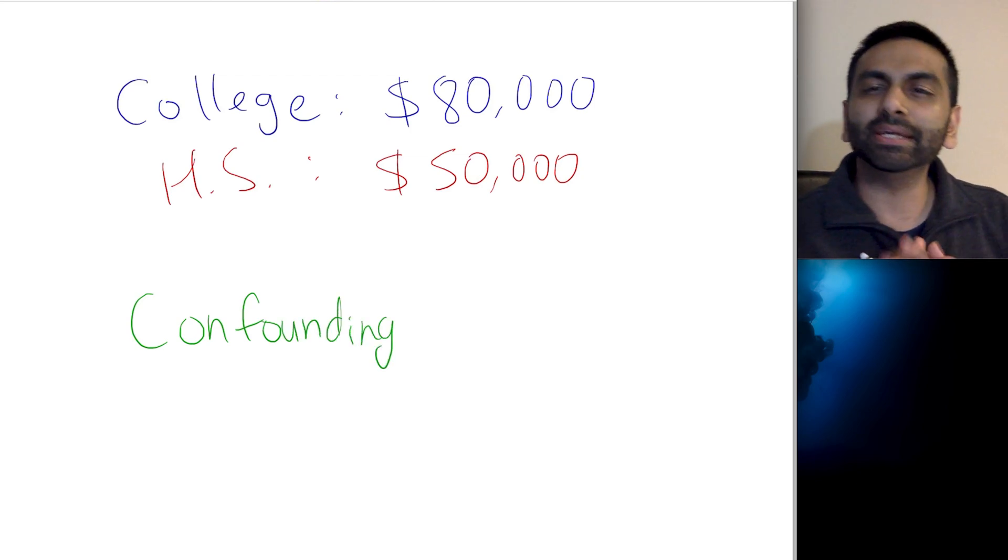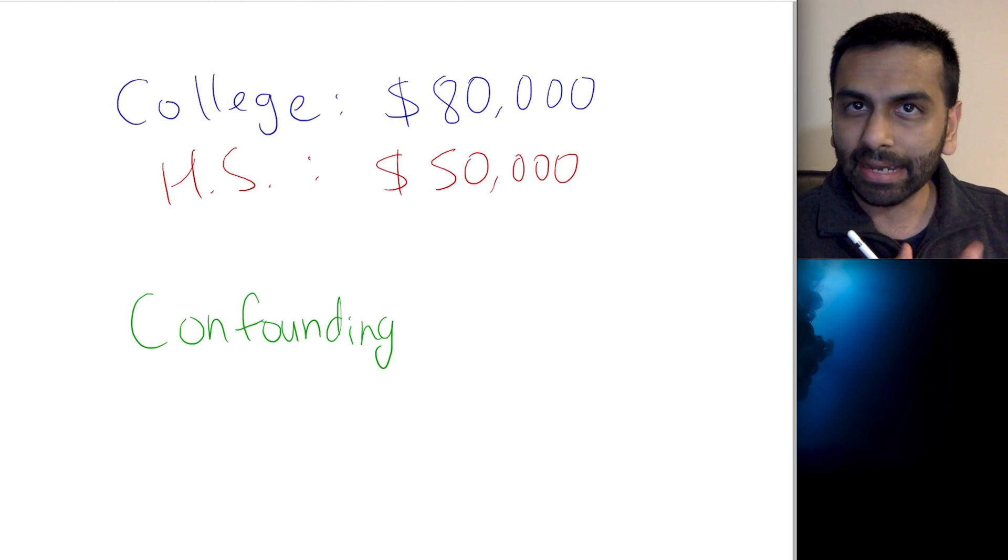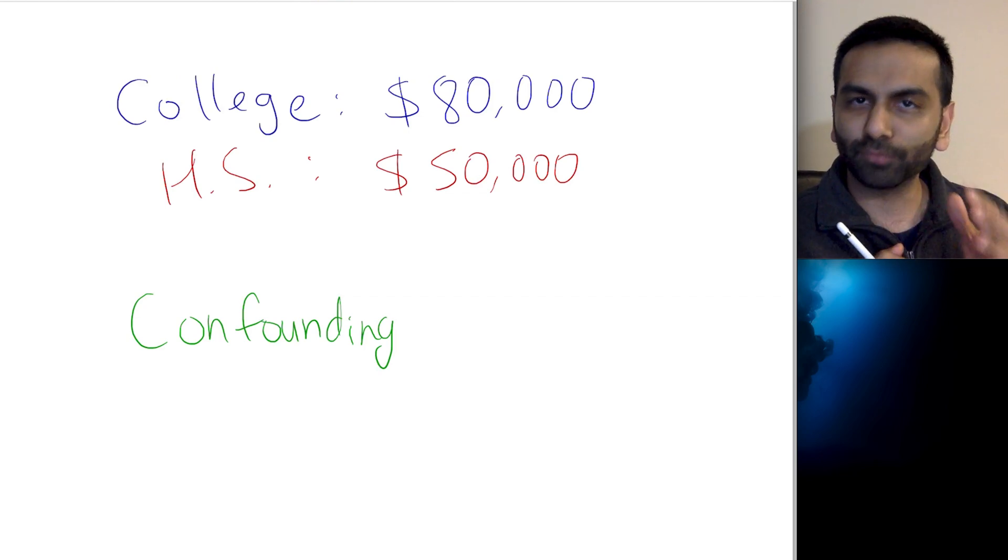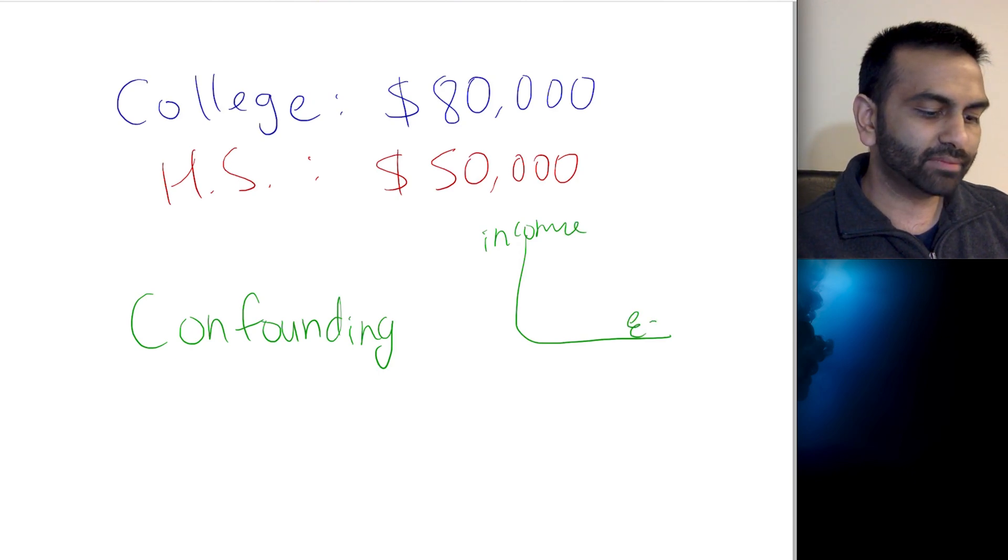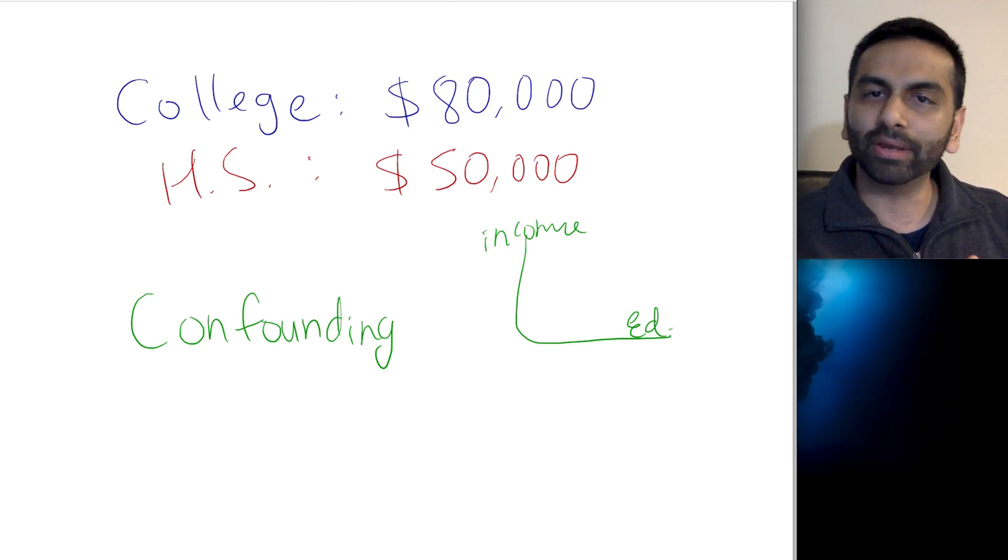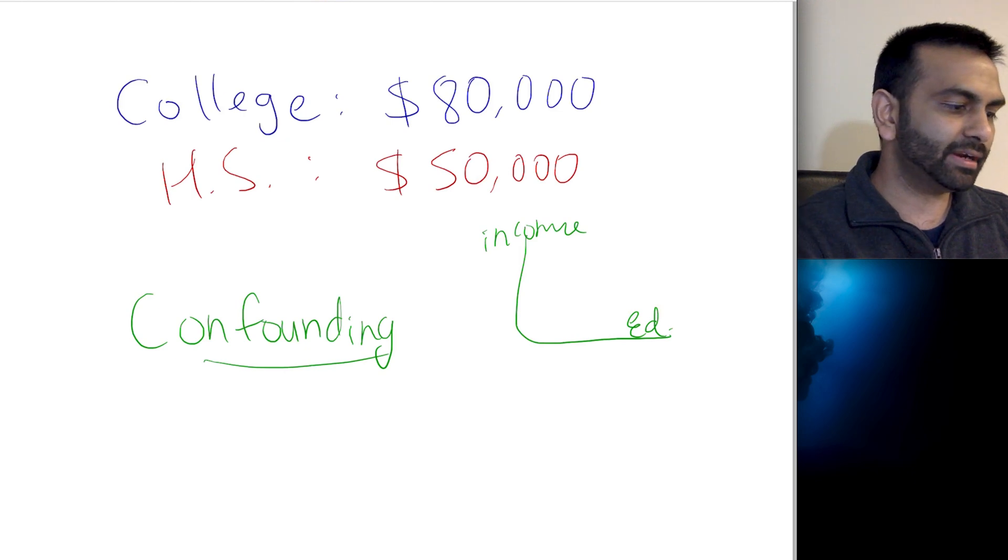A confounding variable is essentially the variable that's doing the actual explaining and not your x variable. So, if we're trying to explain our y variable of income with our x variable of education, and we're trying to say the more education, the more income, that's a causal relationship.